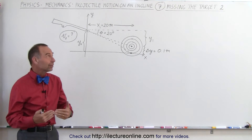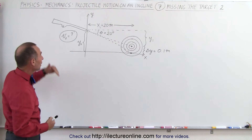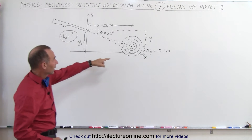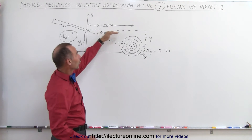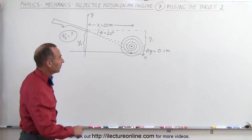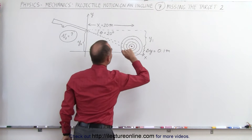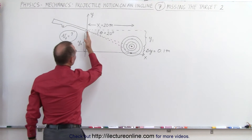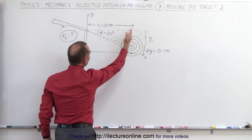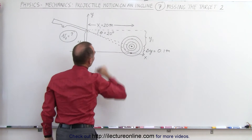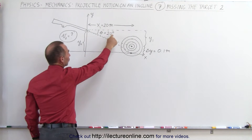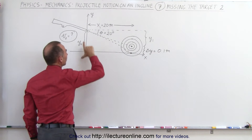Here we have the added difficulty where we're now aiming at a target that's below the horizontal axis, a distance of y1 below. The target is still 20 meters away in the horizontal direction, and notice that the angle relative to the horizontal is 20 degrees.